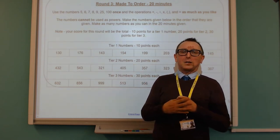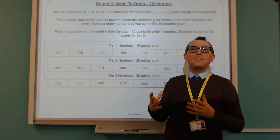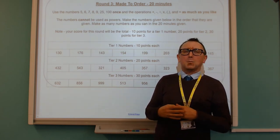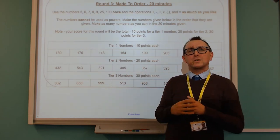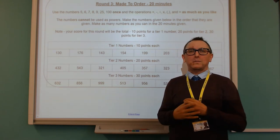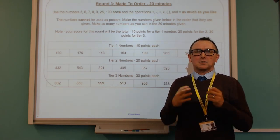And then it goes up to 20 points for tier two and 30 points for tier three. You'll have the time allowed to see how many numbers you can get through. We recommend you try and get all of the tier one numbers before moving on to tier two. Okay guys, good luck.